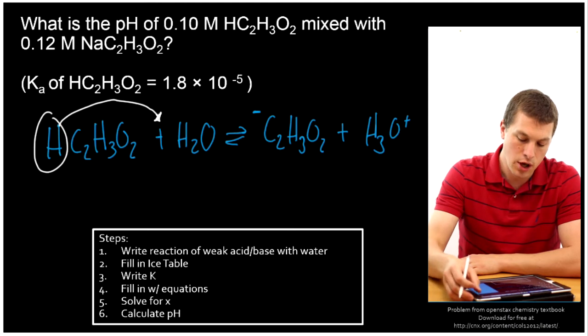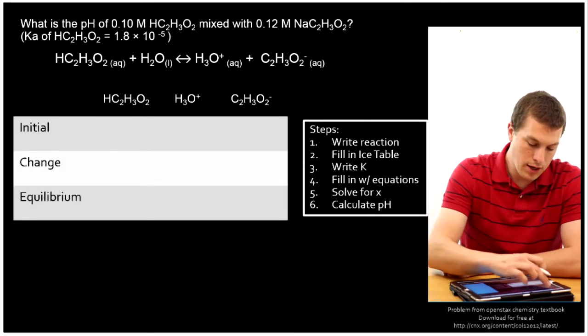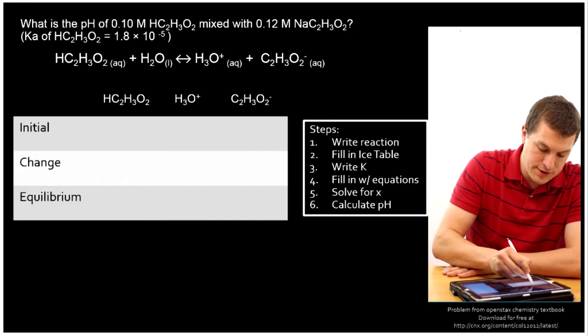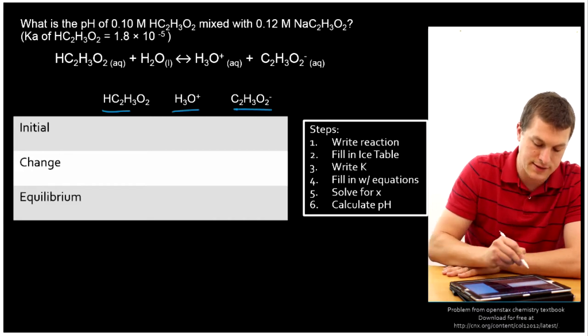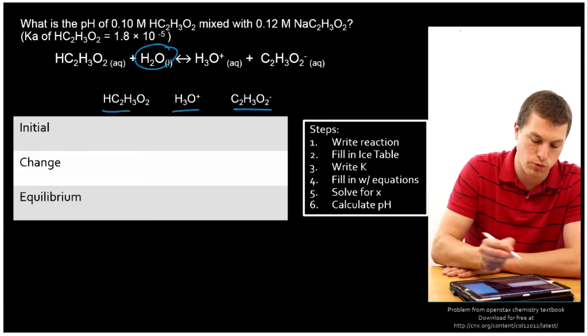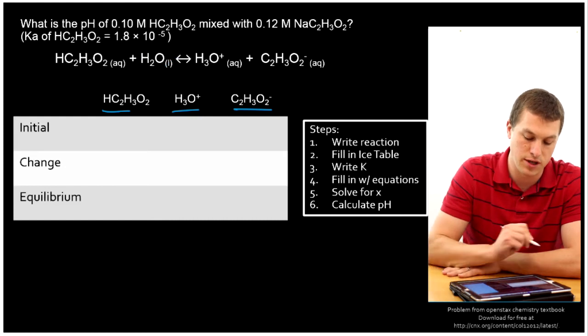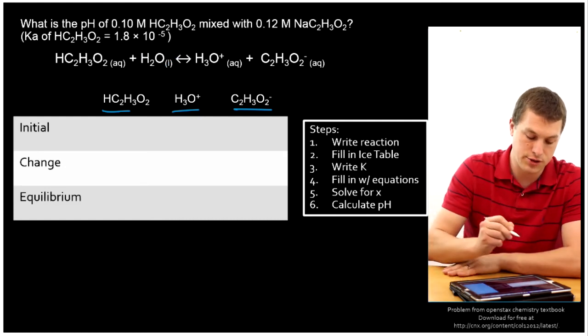Once we have our reaction, we're going to want to fill in our ICE table. And here we have our ICE table and we have acetic acid, the hydronium ion and acetate. We've dropped water out from it because water is liquid, which means it's not included in our equilibrium expression.